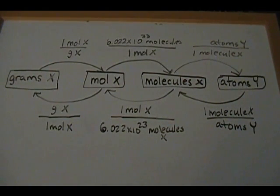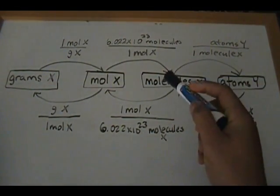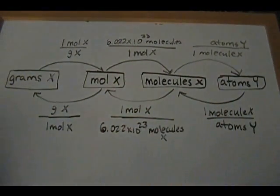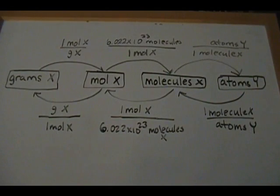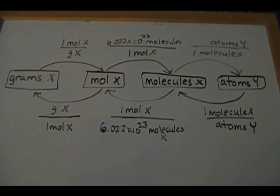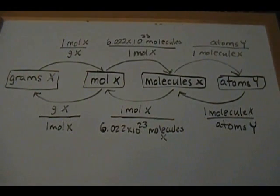I want you guys to realize that the things I have on this board — going from atoms to molecules, molecules to moles, moles to grams — there's a lot more interplay and connections possible. But I'm going to focus on these four main things: the bare bones backbone that will support you in later classes. If you have a good handle on this, the other things will come easily. There are shortcuts for conversions, but we're going to go through it systematically.